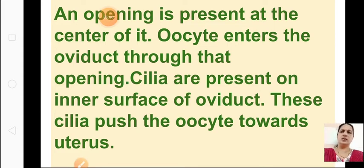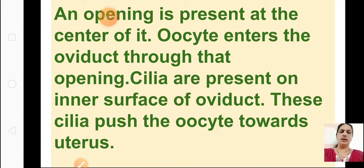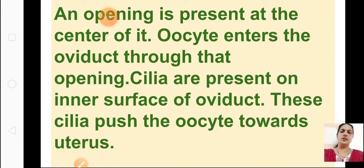The oocyte enters the oviduct through that opening. The oocyte is released from alternate ovaries. Cilia present on the inner surface of the oviduct push the oocyte towards the uterus. The hair-like structures called cilia are present in the oviduct and push the oocyte into the uterus. This is the female reproductive organ.